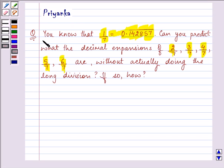The question says, you know that 1/7 = 0.142857 bar. Can you predict what the decimal expansion of 2/7, 3/7, 4/7, 5/7, 6/7 are without actually doing the long division? If so, how?